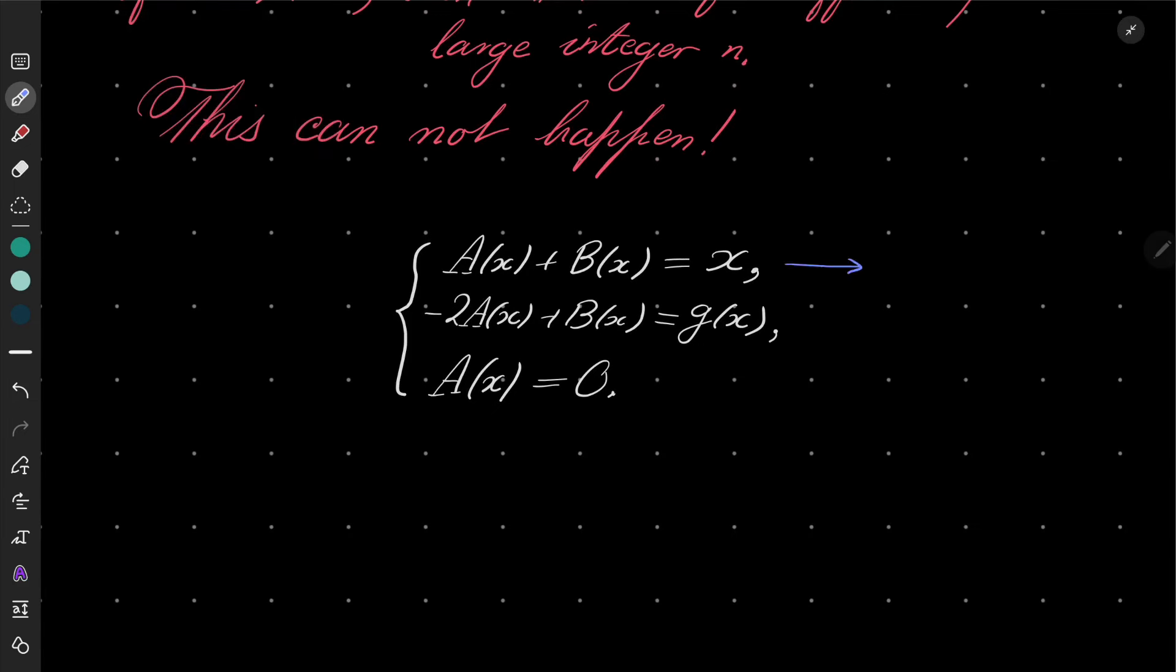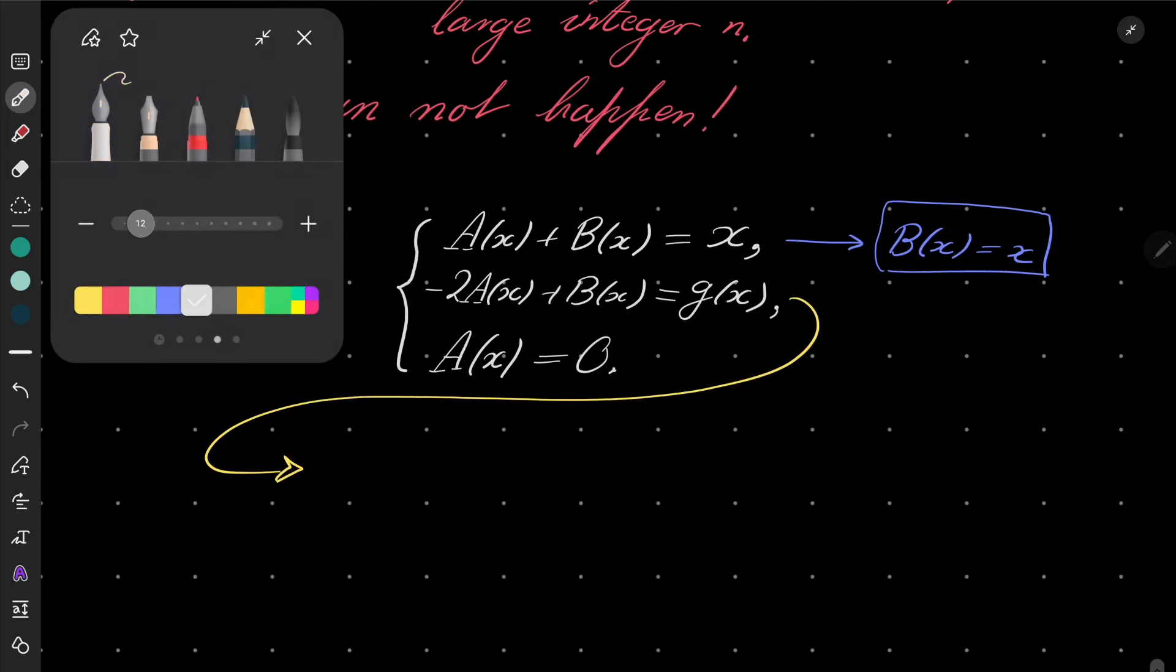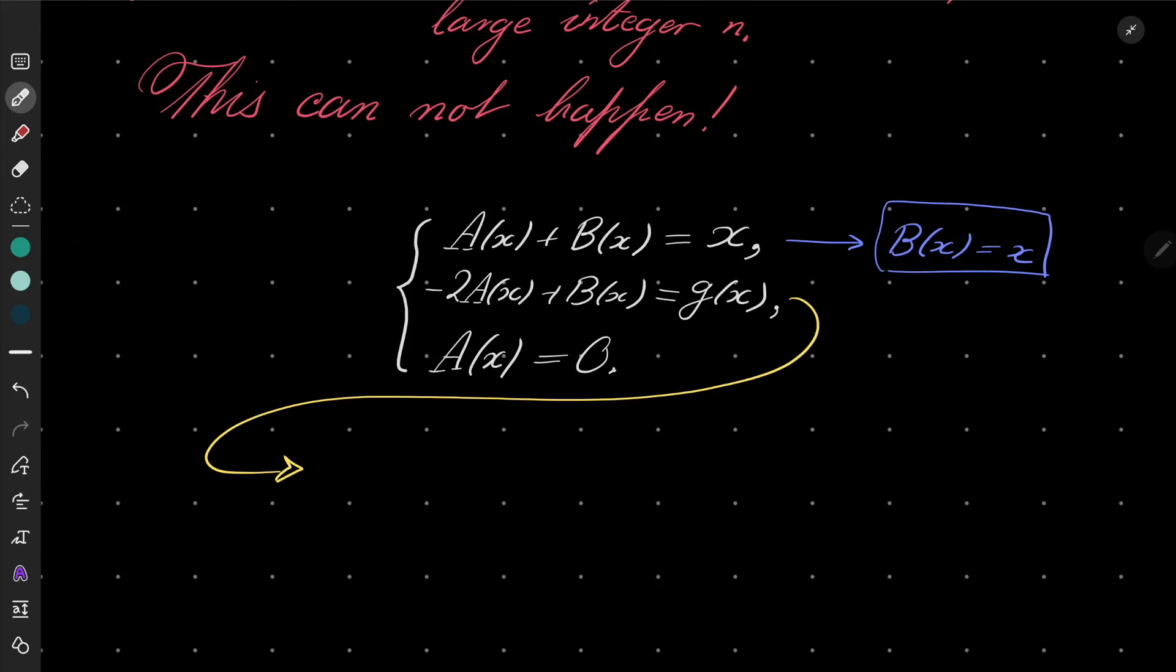Very well. And what can be said? a(x) equals zero, so from the first equation, b(x) must equal x. And now our second equation becomes g(x) equals b(x), but b(x) is x.